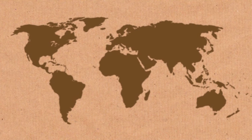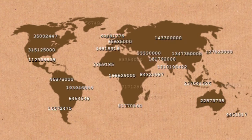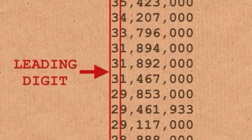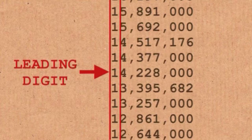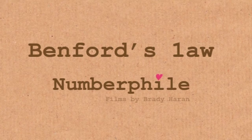This is Benford's Law, and it's about numbers — specifically about the leading digit. For example, you could look at the populations of all the countries in the world and look at the leading digits of all those. So if a population was 1,269, then the leading digit in that case is the 1.